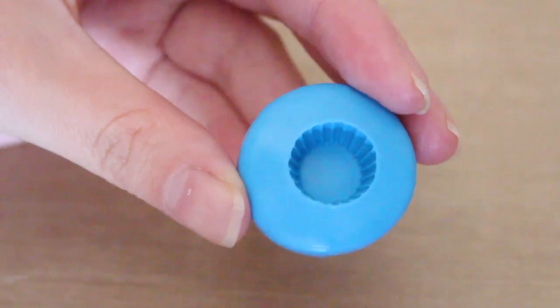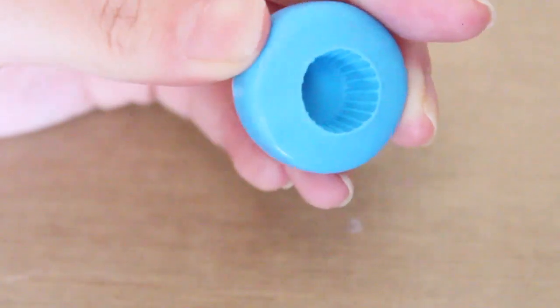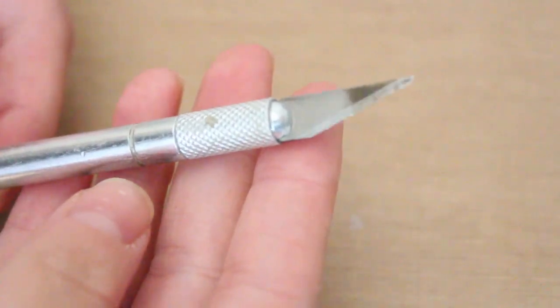So I'm using a 14 millimeter cupcake mold that I got from Miniature Sweets. I will put a link down in the description box. I'm also using a toothbrush that I use only for crafting, an exacto knife.